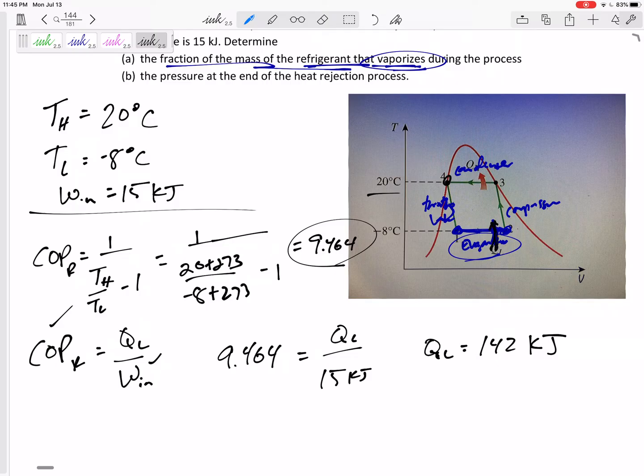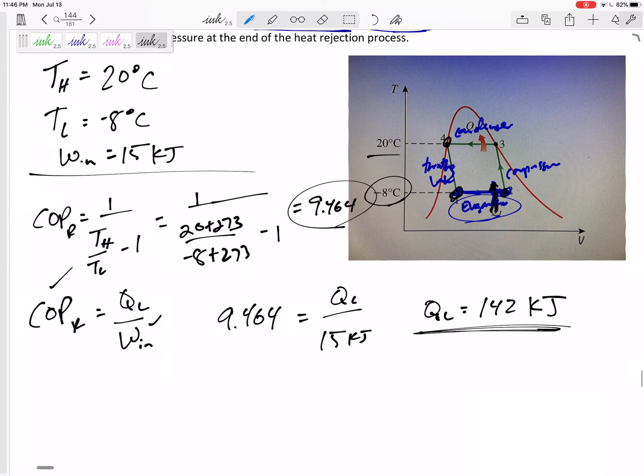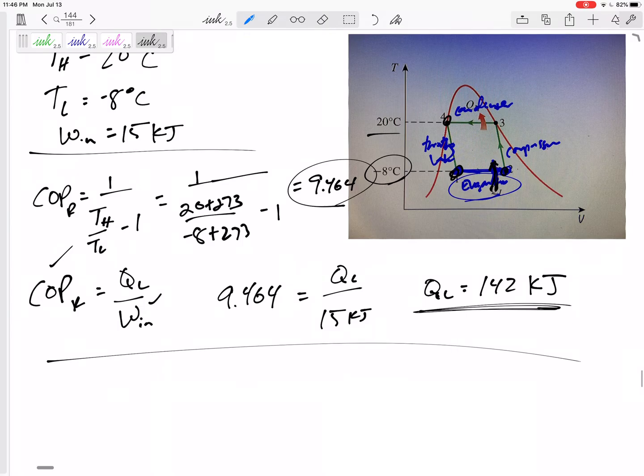So it didn't ask for that exactly, but that is the QL that the refrigerant absorbs during the evaporator, the evaporation process from 1 to 2, when some of the fluid is going from liquid to vapor. If I know that is the amount of heat absorbed by the refrigerant, and I know that the refrigerant is staying at -8°C as a mixture with some of it vaporizing to gas still at -8°C, how can I find the heat transfer? Think about the latent heat of vaporization.